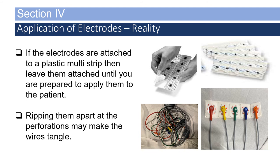A veteran provider once told me: work quickly but never rush. If the electrodes are attached to a plastic multi-strip, leave them attached until you're prepared to apply them to the patient. Some electrodes come from the manufacturer on plastic strips with perforations between each electrode — ripping them apart at the perforations may cause the attached wires to get tangled. The last thing you need when caring for a critically ill patient is 10 wires knotted together.